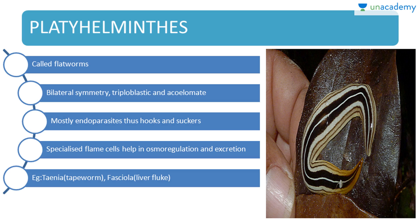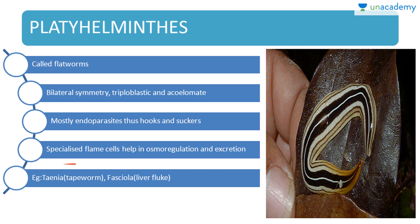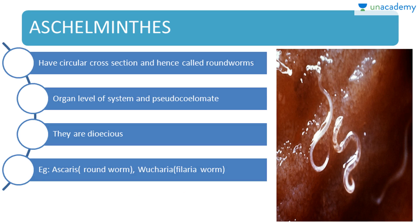Next is Platyhelminthes, also called flatworms. They have bilateral symmetry, are triploblastic and acoelomate. They are mostly endoparasites with hooks and suckers for attachment. Specialized flame cells help in osmoregulation and excretion — flame cells are peculiar to Platyhelminthes. Examples: Taenia (tapeworm) and Fasciola (liver fluke).